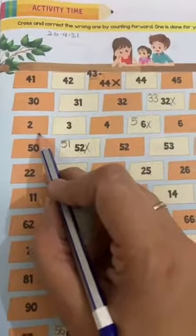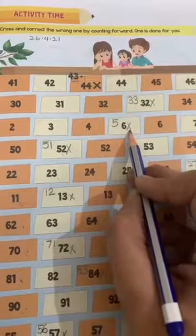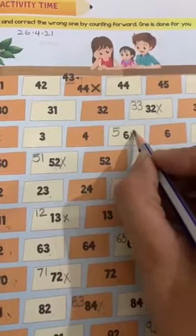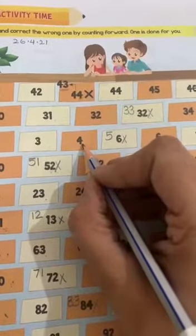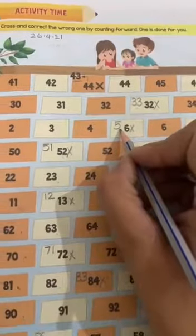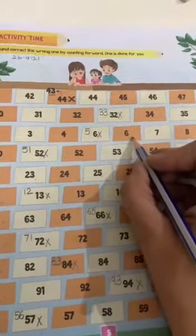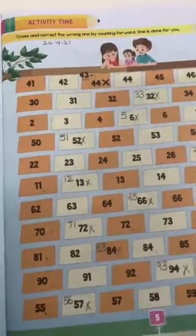Next line. Number 2, 3, 4, 6. This is again wrong. Cross number 6. So, what comes after 4? It is number 5. Write number 5. Then count 6, 7, 8.